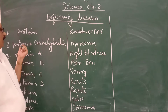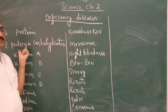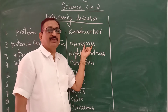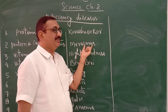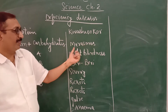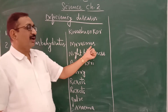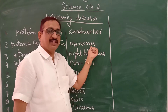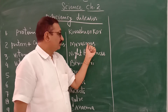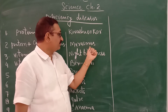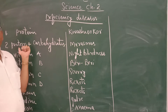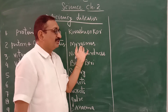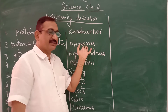Second, the deficiency of protein as well as carbohydrates leads to a disease that is Marasmus. This deficiency disease I have explained earlier. This disease especially occurs in children up to 1 year — below 1 year. The chances of Marasmus are there due to deficiency of both protein and carbohydrates. The symptoms of Marasmus have already been discussed with you.